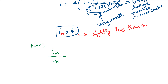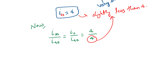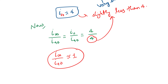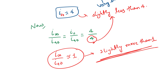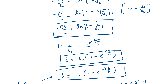In the question, we have to find the ratio of the current at infinity to the current at 40 seconds — that is I∞ divided by I₄₀. I∞ equals I₀ which is 4 amperes, and I₄₀ is also approximately 4 but slightly less than 4. So this ratio is close to 1. Since the denominator is slightly less than 4, the ratio would be very slightly greater than 1 — greater than 1 by a very, very small amount.